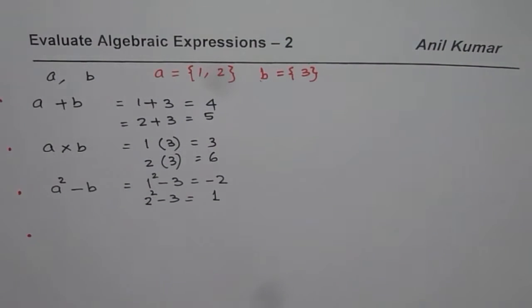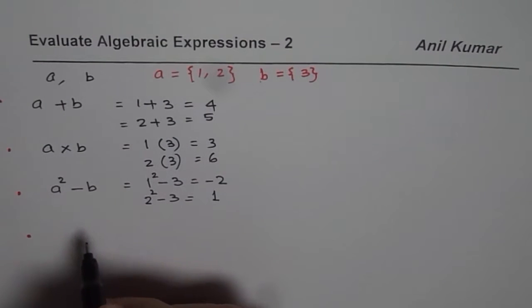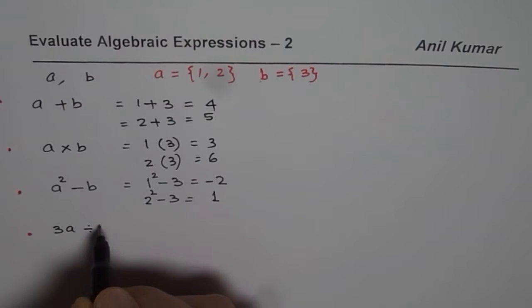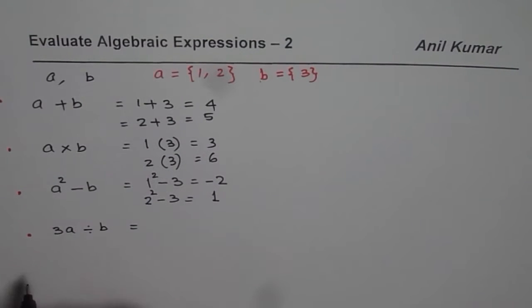In this case, we have 2 variables A and B. So that is how we have to do. Now let us take a variable as 3 times A divided by B. In that case, what do we get?